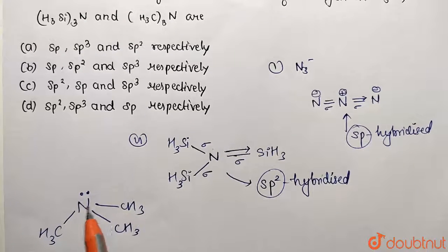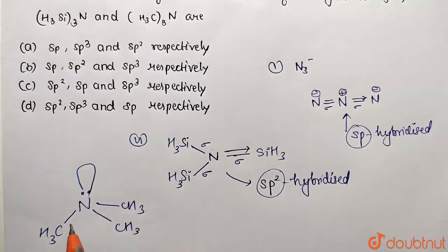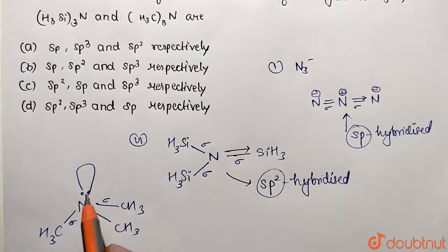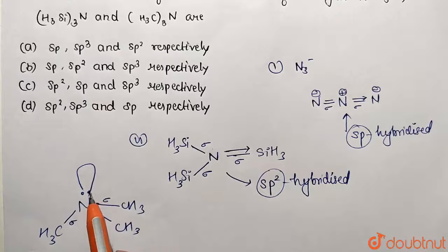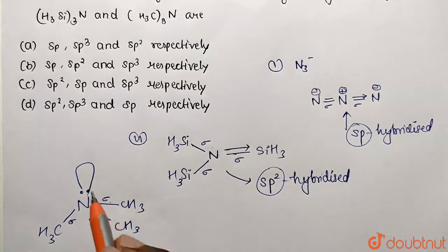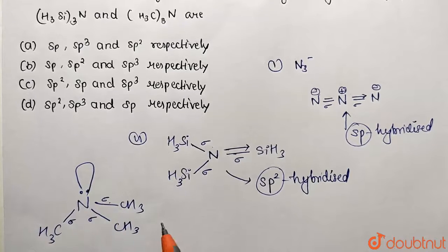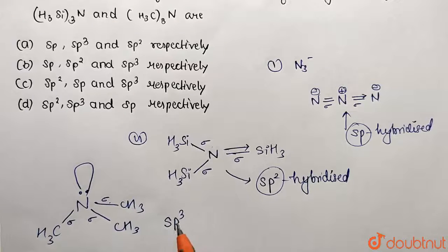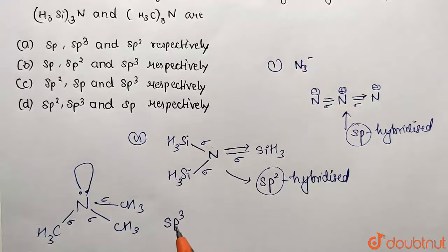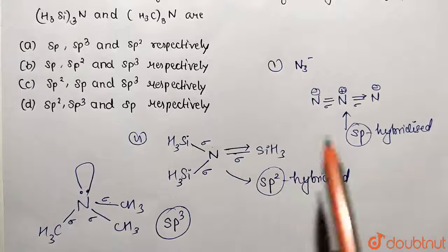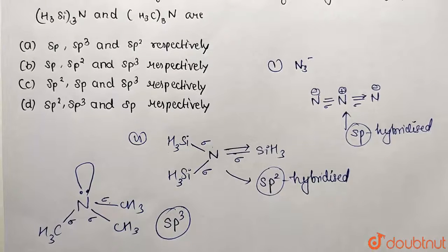So this is residing as the lone pair only. So if you calculate number of sigma bonds, this is one sigma, second sigma, third sigma, and this lone pair also needs space of orbital to locate itself. So this is going to require four space - three for sigma bonds and one for lone pair. So what is the orbital space required and the hybridization? It's going to be sp3, that means four orbitals are required s and p3. So this is the hybridization respectively. So sp, sp2 and sp3 are the answer.